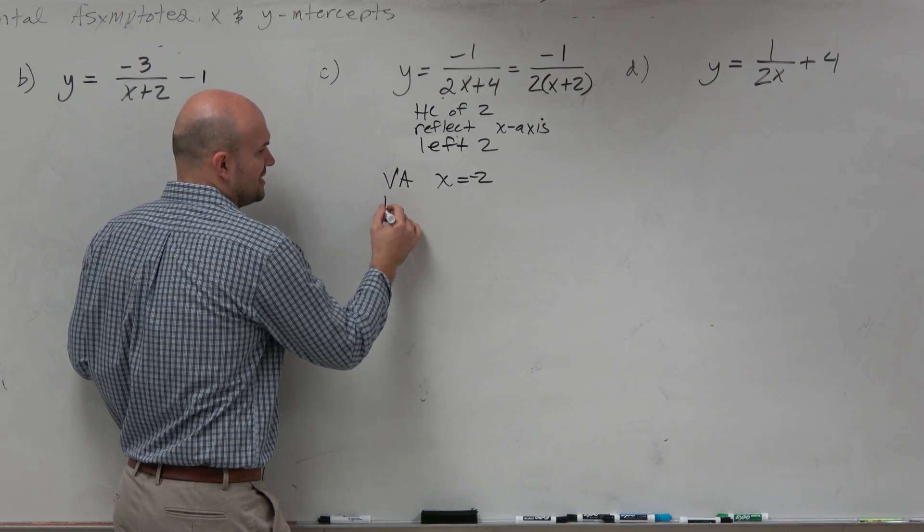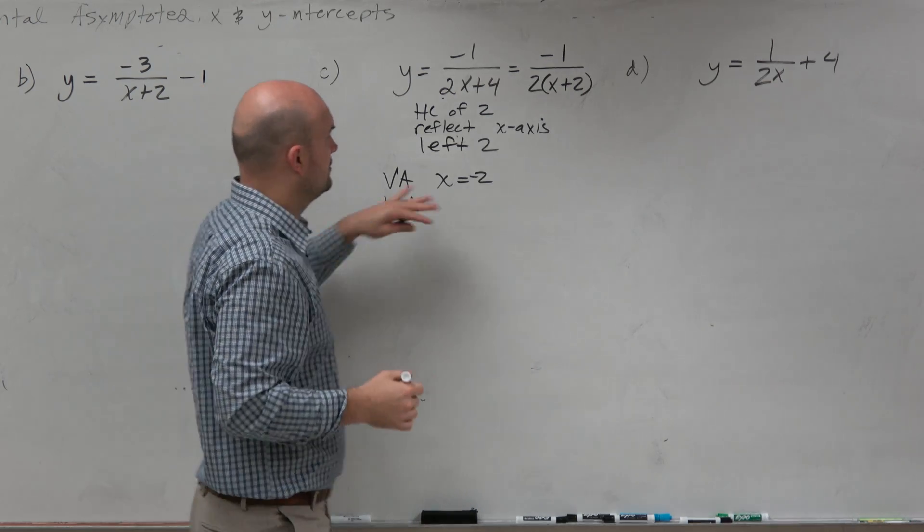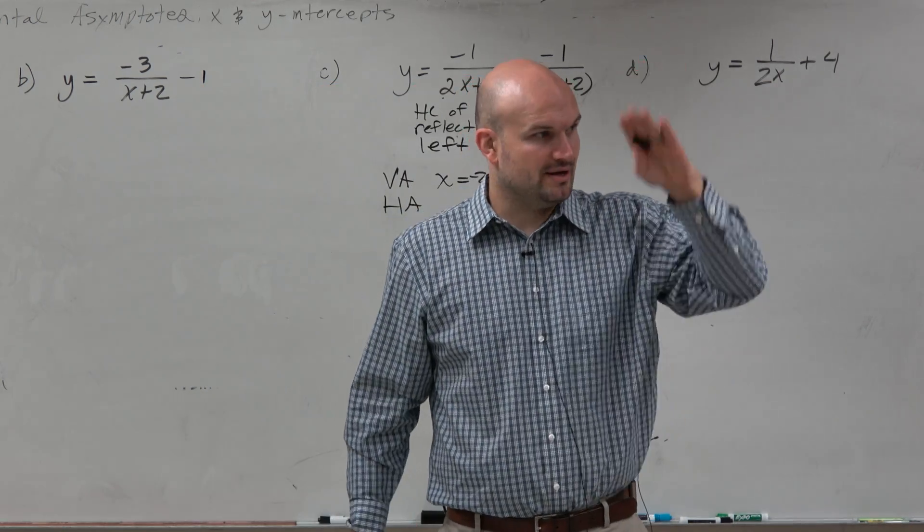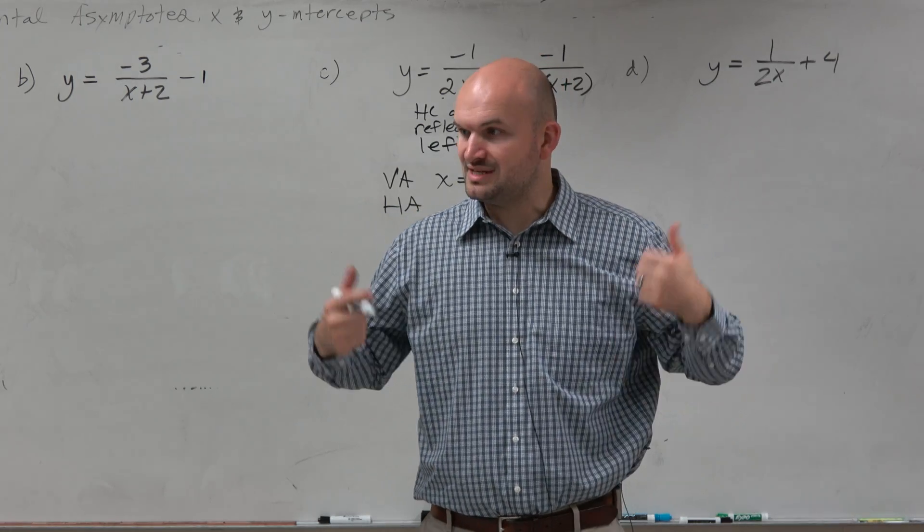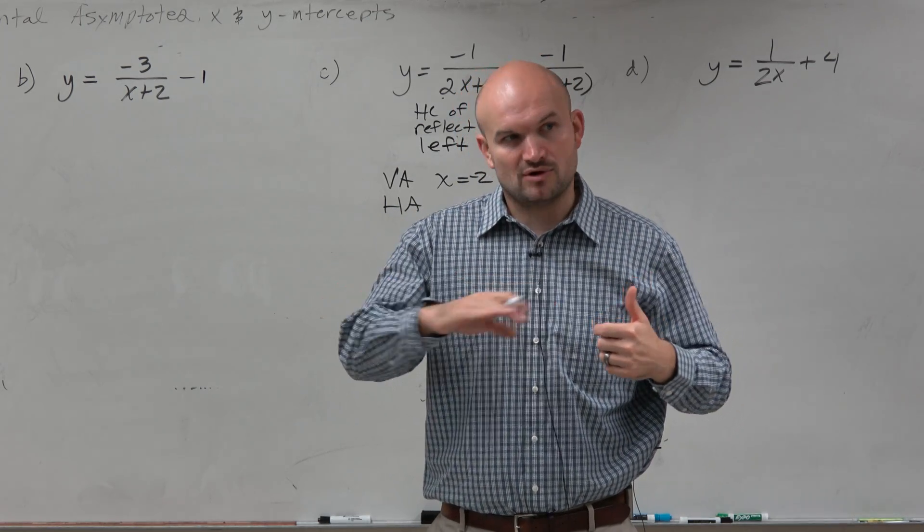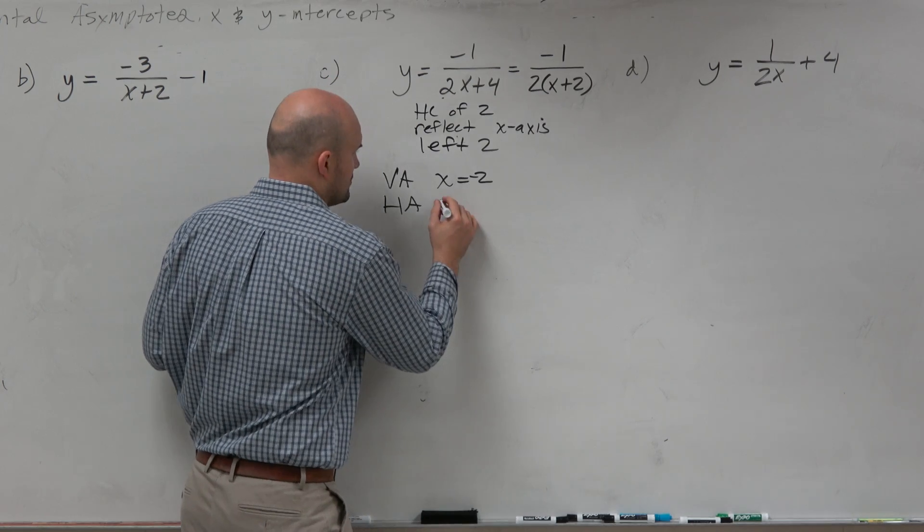Let's look at the horizontal asymptote. Well, we didn't talk about anything going up and down. We're not shifting the graph up or down. So therefore, my horizontal asymptote is going to remain the same at y is equal to 0.